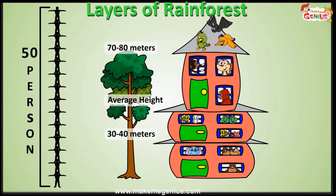So, based on their height, we divide rainforests into four layers. That's correct. The names of these layers are Forest Floor, Understory, Canopy, and Emergence.